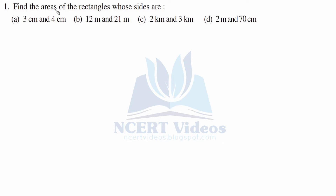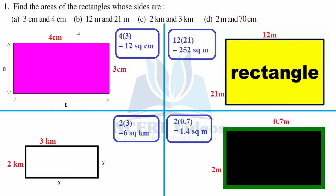First question: find the areas of the rectangles whose sides are given. First part: 3 centimeter and 4 centimeter. So 3 centimeter is your breadth and 4 centimeter is your length. We will multiply it, so 4 into 3 is 12 square centimeter. Area is length into breadth.